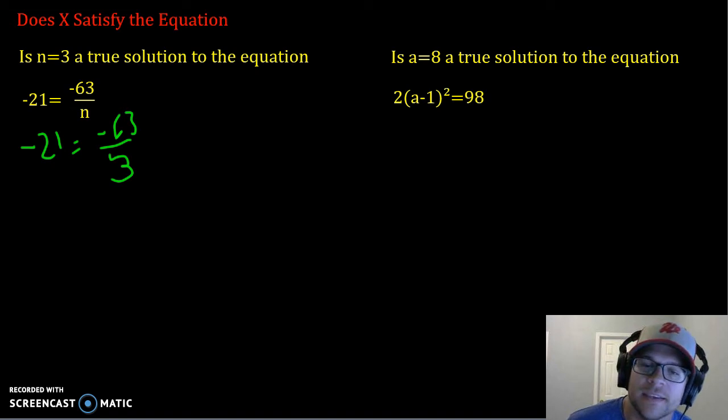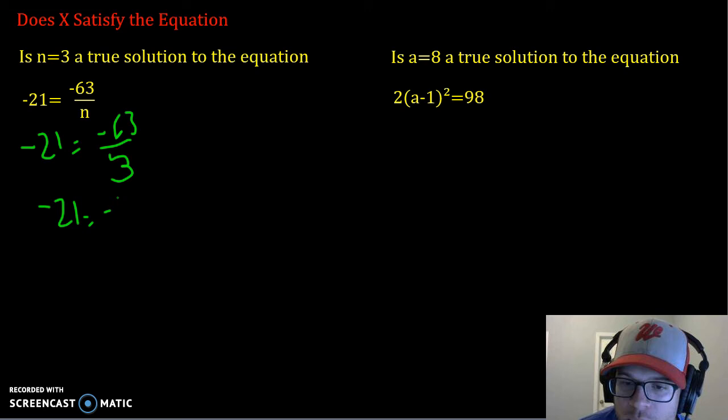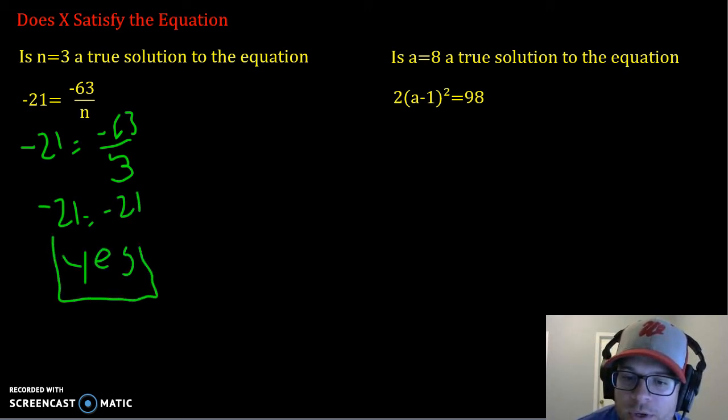So we're going to simplify this. On the left-hand side, there's nothing we can do. It's just one single number. But on the right-hand side, we have a division or a fraction, and negative 63 divided by 3 is negative 21. So since we have the same thing on both sides, then yes, n equals 3 is a true solution to that equation.